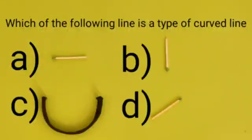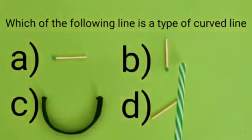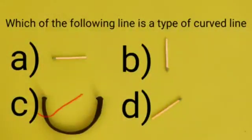Now we will solve a question. Which of the following is a type of curved line? Option A is horizontal line, Option B is vertical line, Option C is curved line, Option D is transversal line. Option C is correct because it is a type of curved line, so we will put a tick on this.